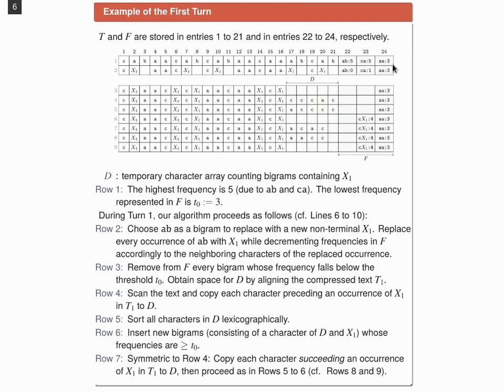What we do during this turn is first to determine the bigram with the highest frequency, which is for instance a b, and replace all occurrences of a b with a new non-terminal, let's say x1, which is done in the second row. Consequently, the frequency of a b drops down to 0, but also the frequency of c a drops down to 1. That's because occurrences of c a got replaced by the x1.